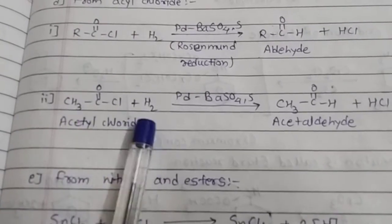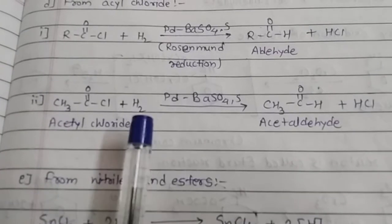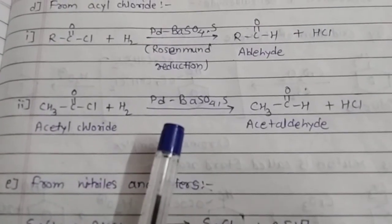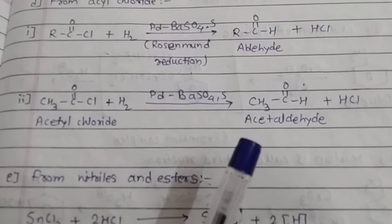One example is acetyl chloride, CH3COCl, derivative of carboxylic acid. With hydrogen in the presence of palladium barium sulfate sulfur, it will give acetaldehyde plus HCl.